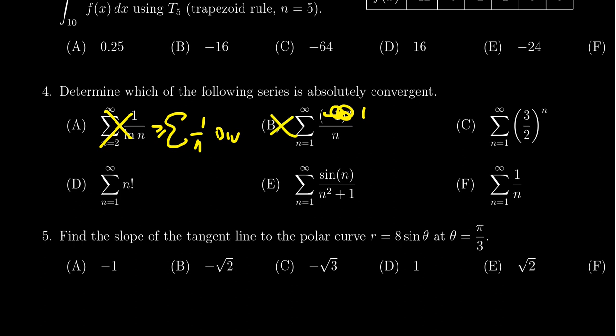If you look at choice C, we're working by process of elimination. I can also notice that F is the harmonic series, so it's not that one. When you look at choice C, this is a geometric series, but the common ratio is three halves, which is greater than one. So that would be a divergent geometric series.